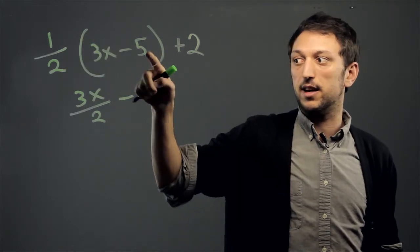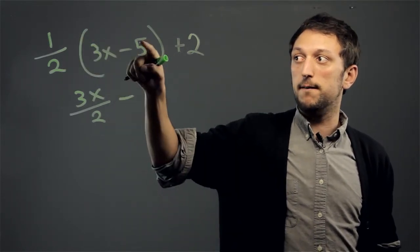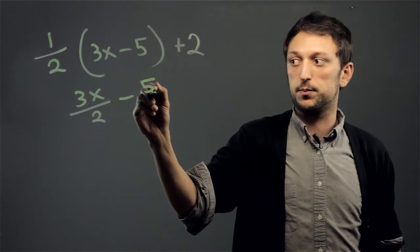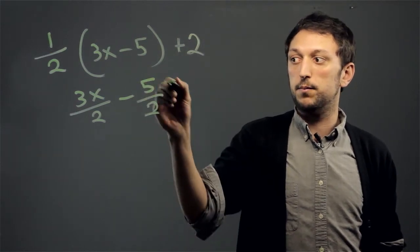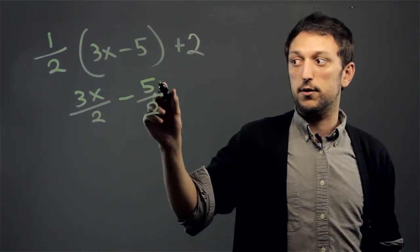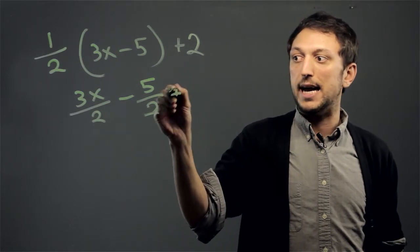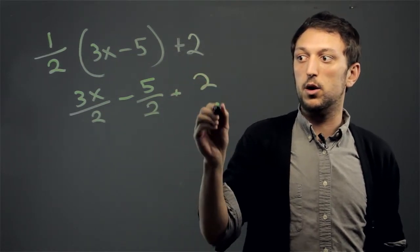1 over 2 times negative 5 is going to be minus 5 over 2. And then you have 3x minus 5 over 2, and we're going to add 2 over 1.